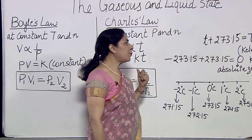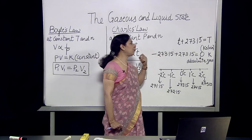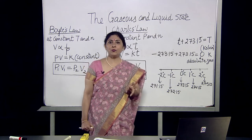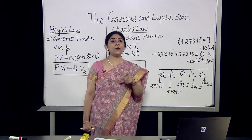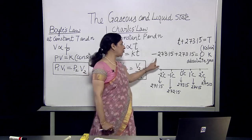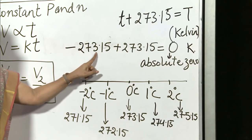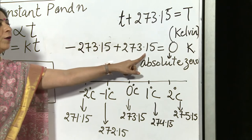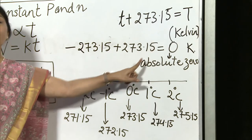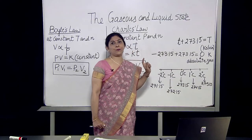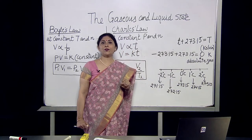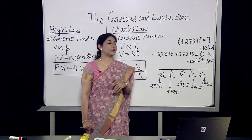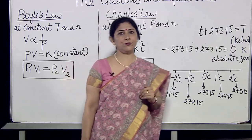If the temperature is minus 273.15°C and you add 273.15, you get 0 — that is absolute zero. Absolute temperature is the temperature at which the volume of a gas is zero. So minus 273.15°C corresponds to 0 K, which is the absolute zero.